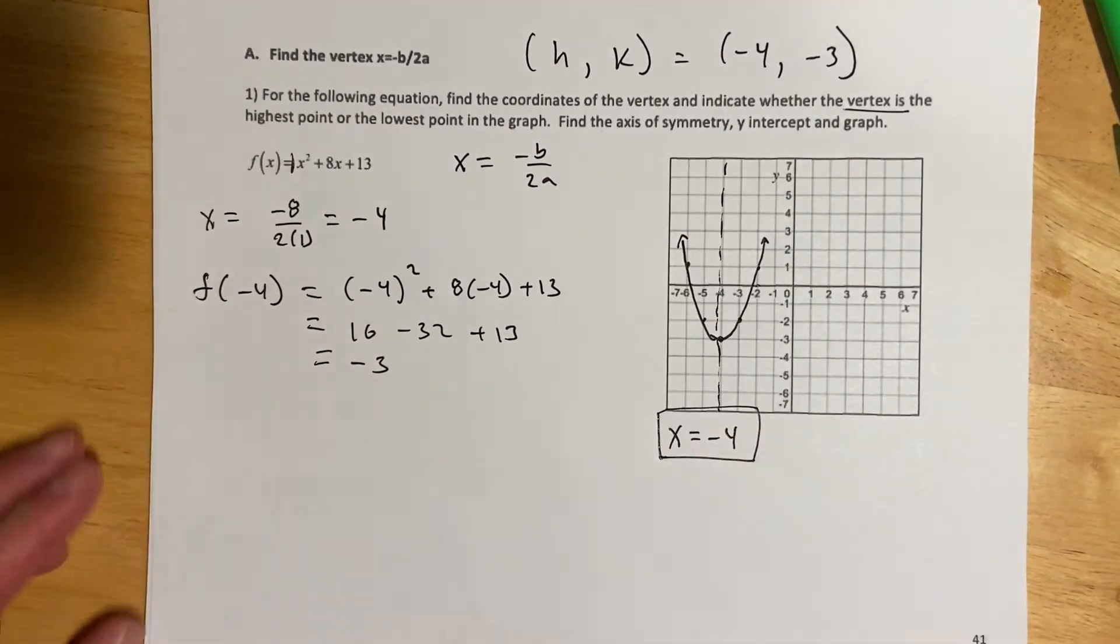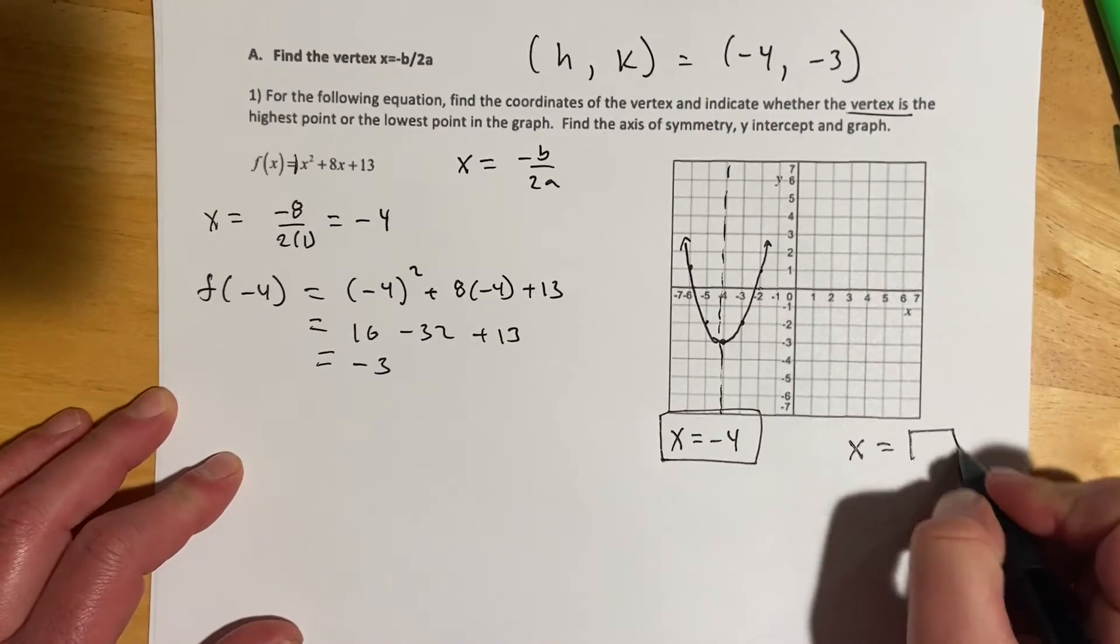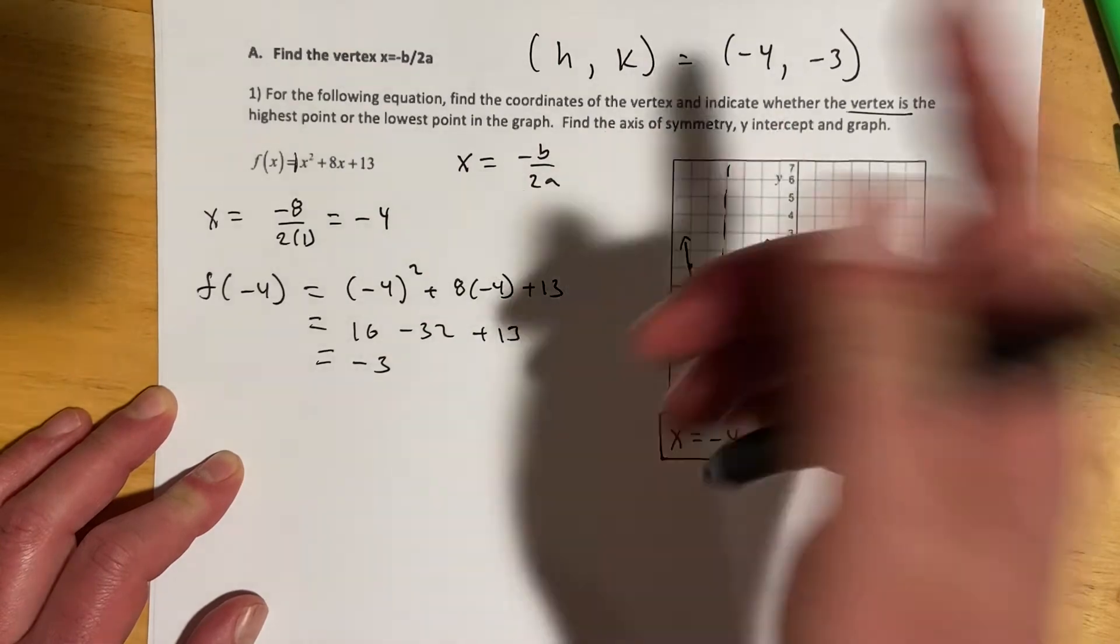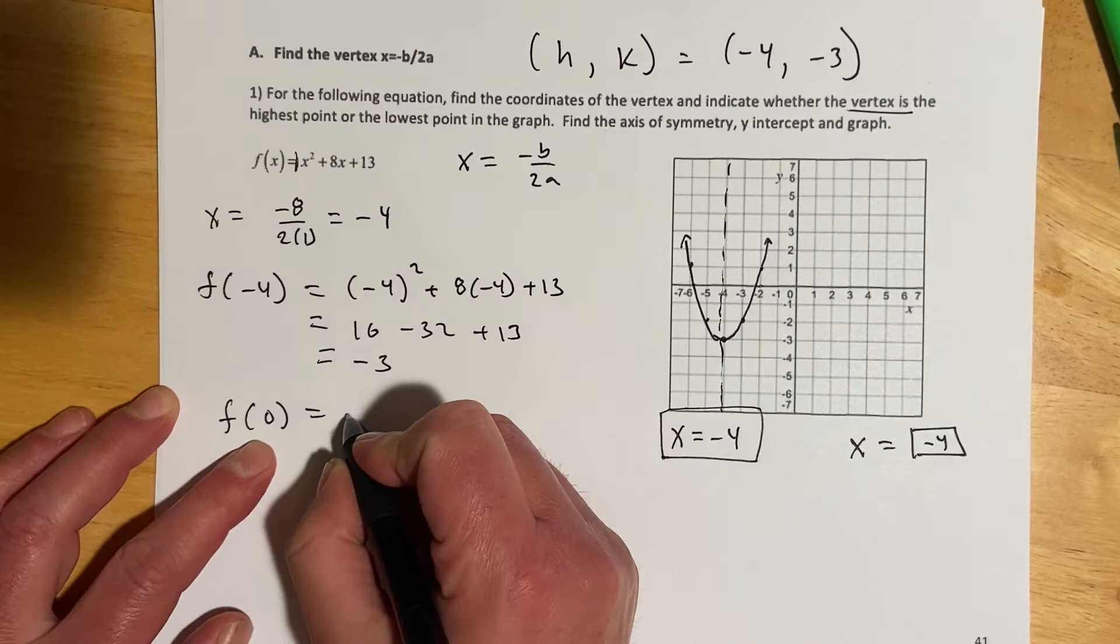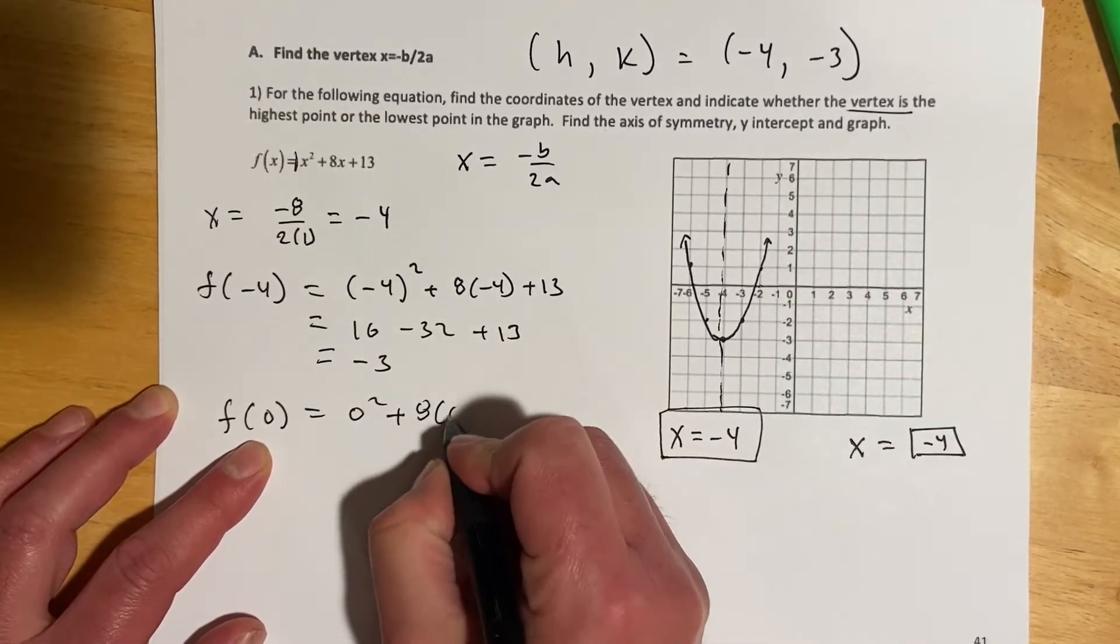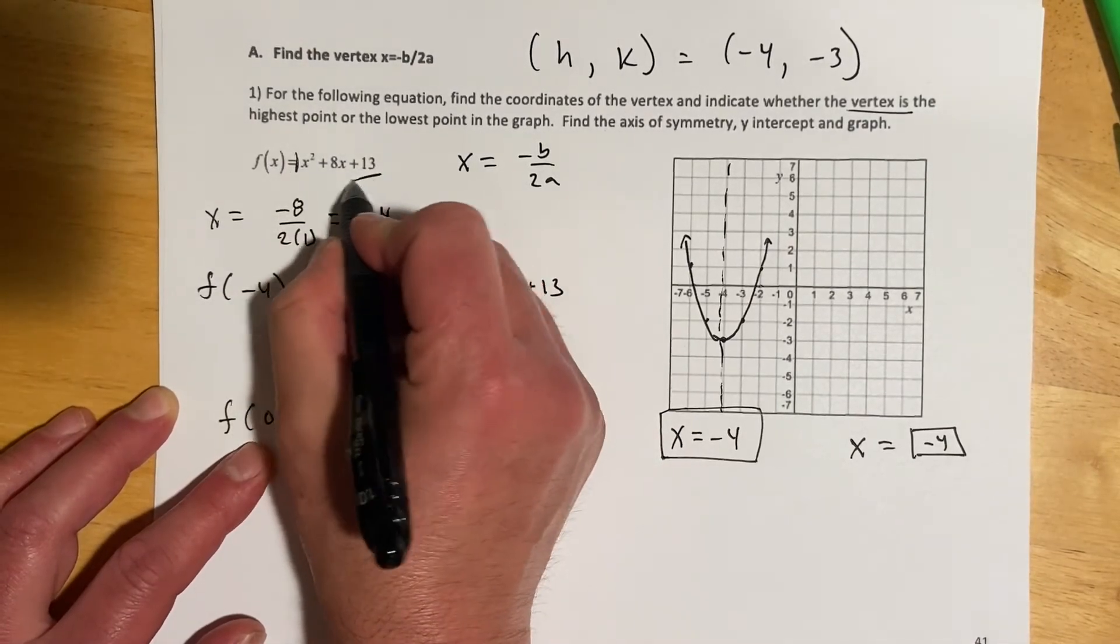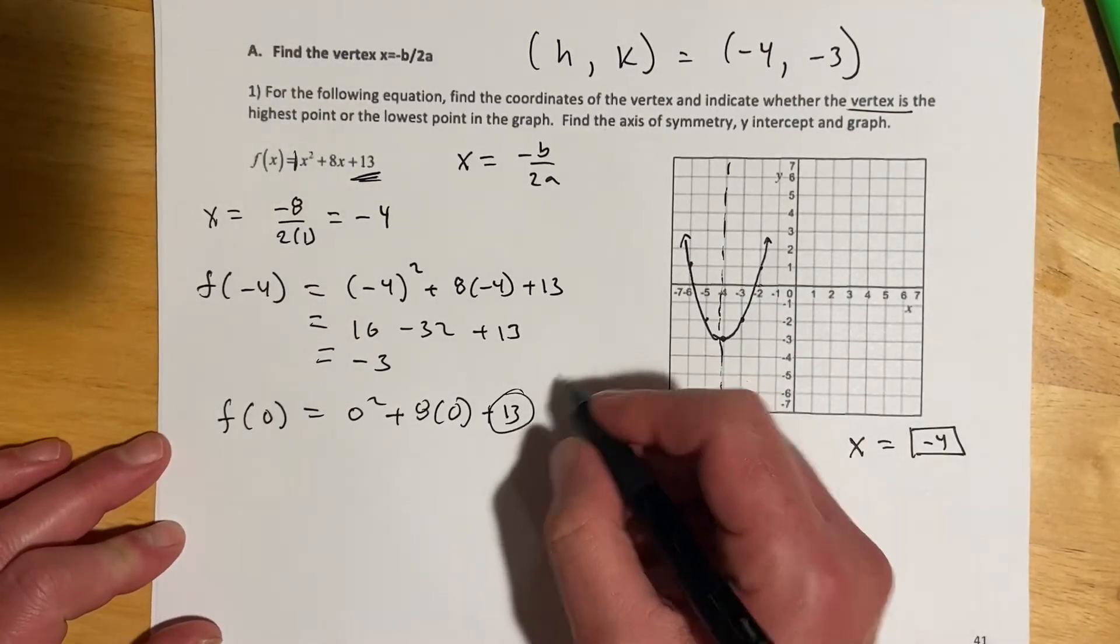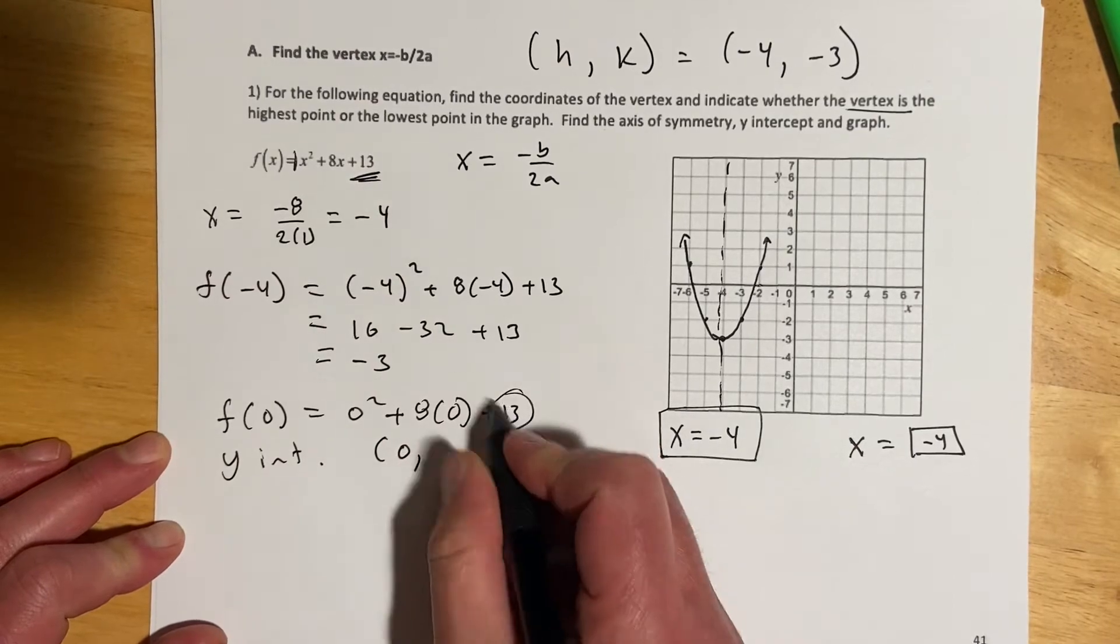Again, x equals makes it an equation, not just a floating negative 4. Unless, of course, the box has x equals in front of it. Then you get to type negative 4. Y-intercept, that one's easy. Let's do that first. That just means we find f of 0. So that would be 0 squared plus 8 times 0 plus 13. And so when we're in standard form, this number on the end, that's always going to be your y-intercept.